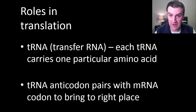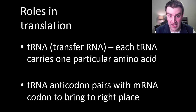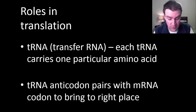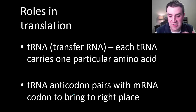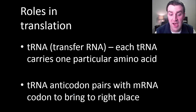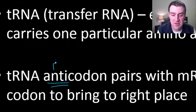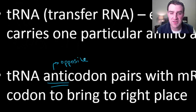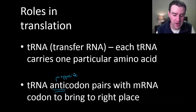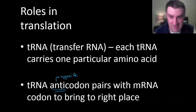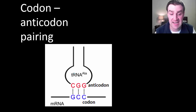Now let's move on to our second RNA in the process. Transfer RNAs actually carry the amino acids — each one carries a very particular amino acid. How do they know where to bring it? Because amino acid order is important. tRNAs also have a set of three letters called anti-codons — anti meaning opposite. They have the opposite three letters so that they pair up with the appropriate mRNA codon and bring the amino acid right there.